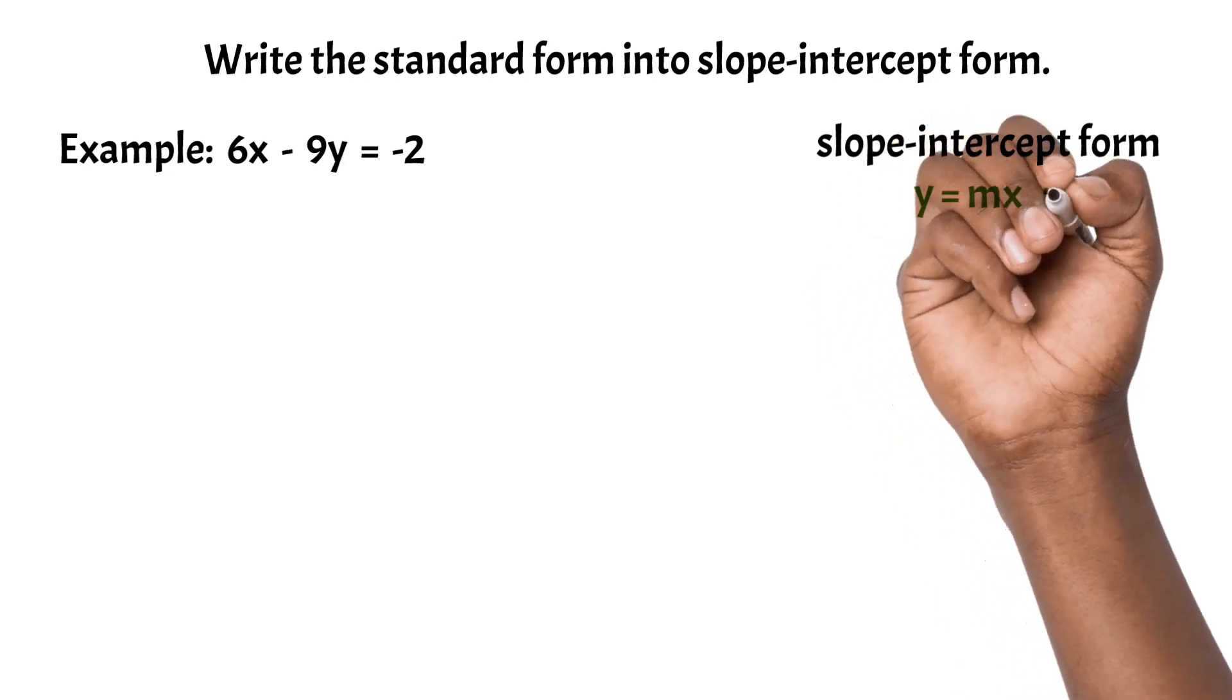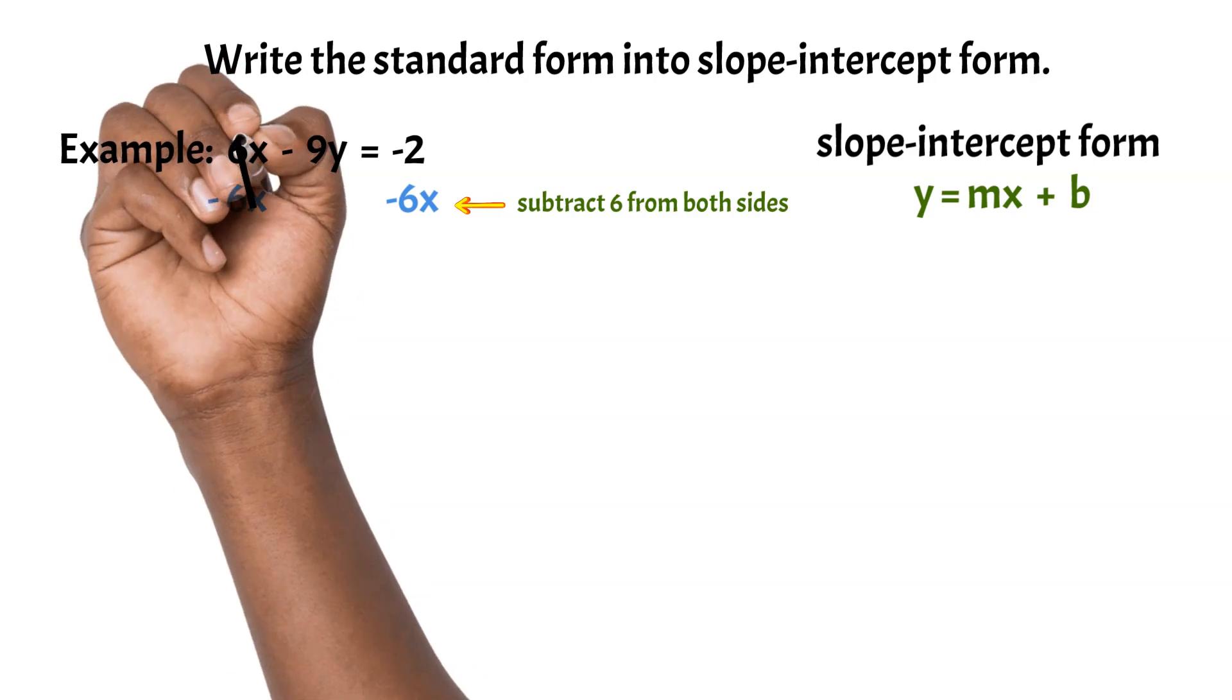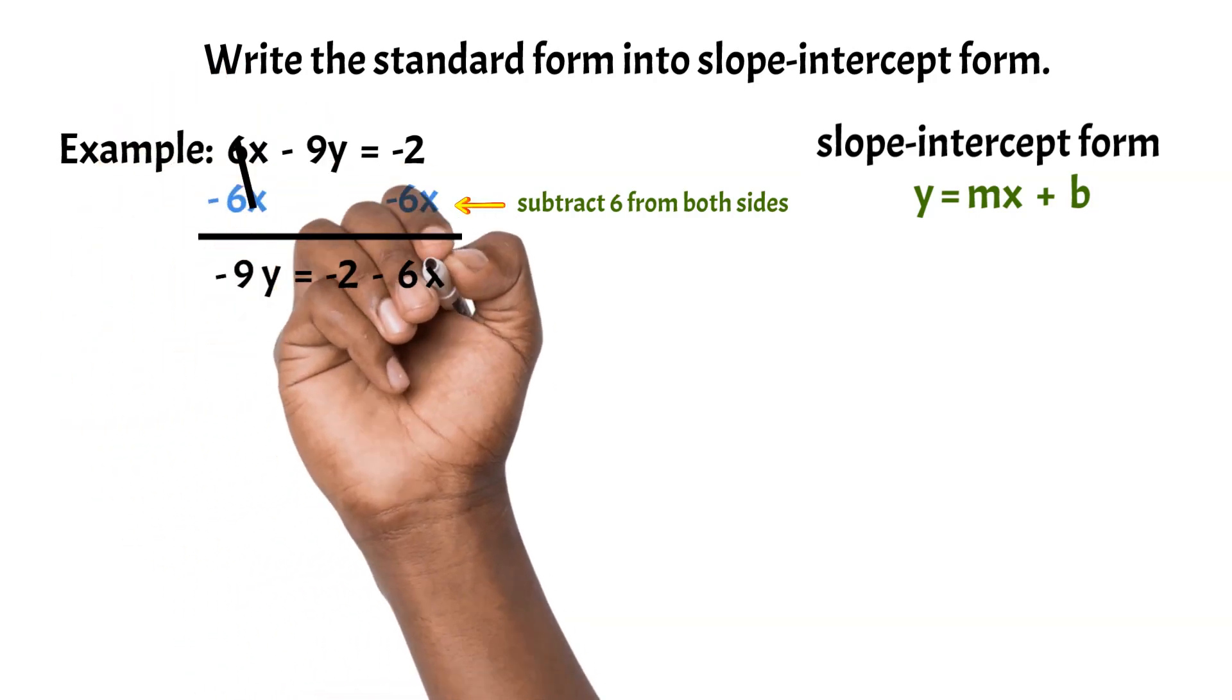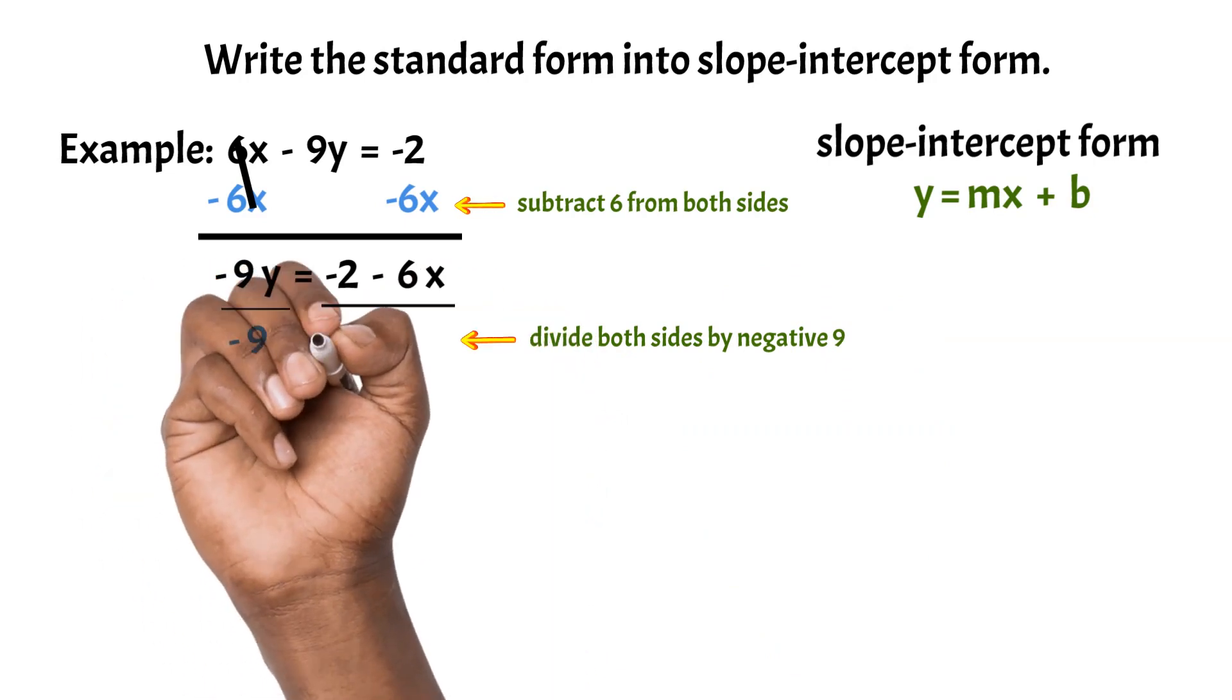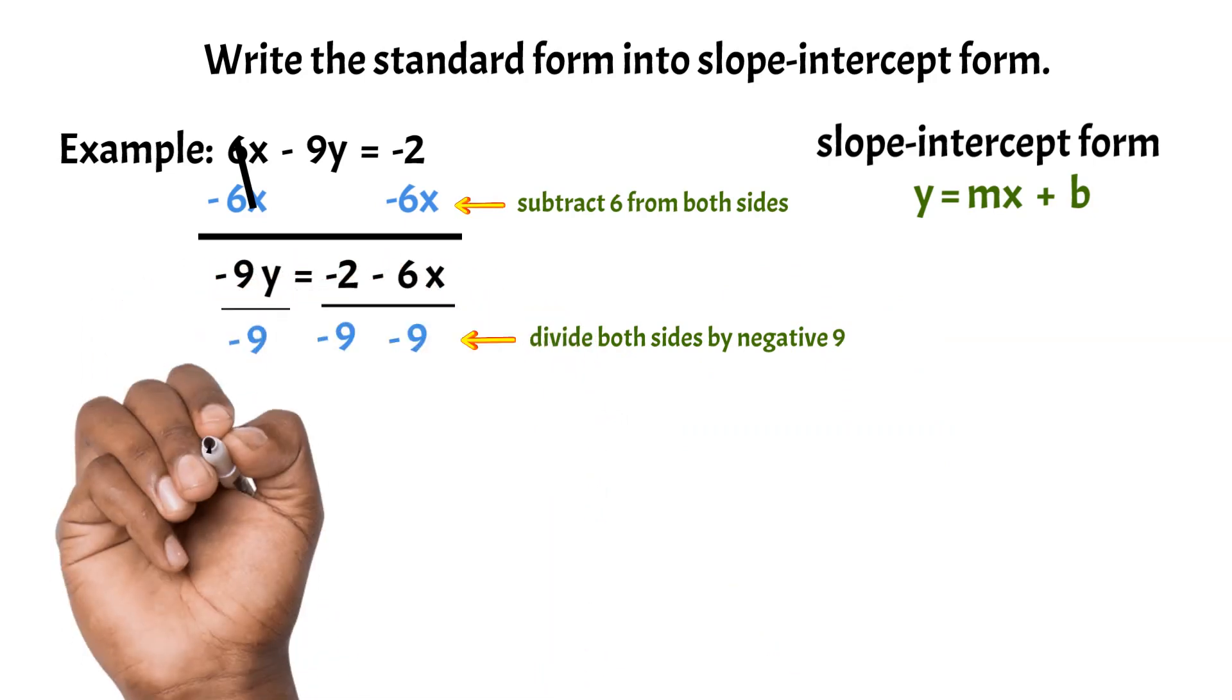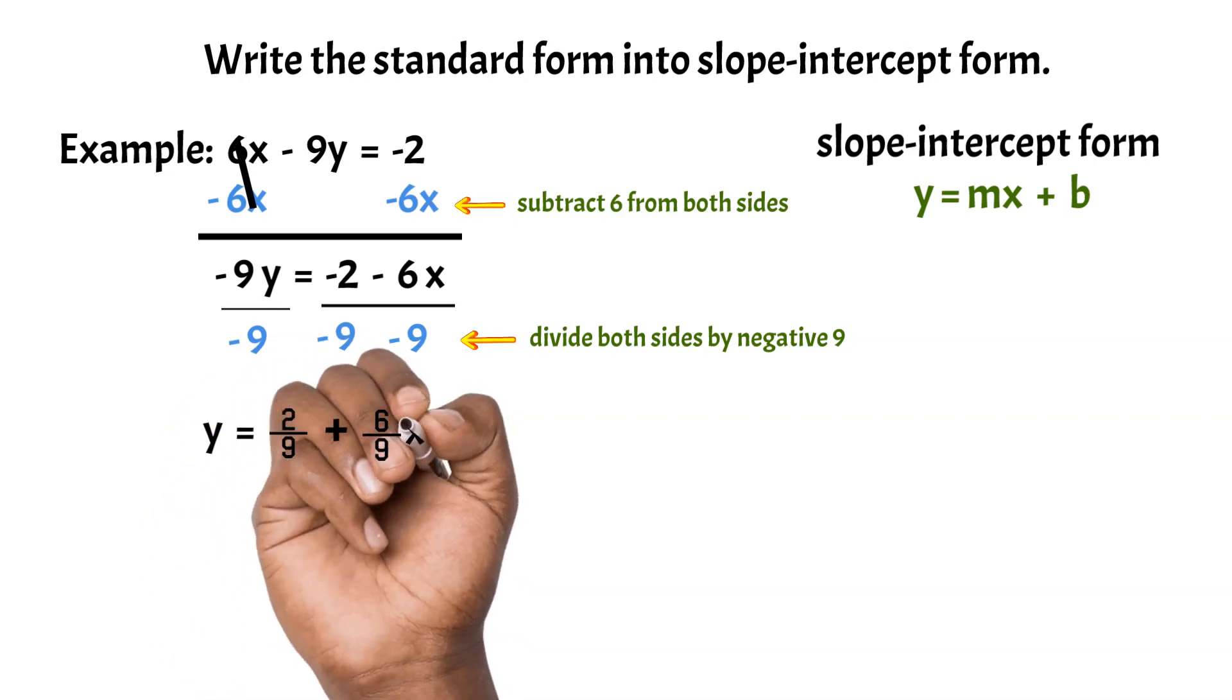Example: 6x - 9y = -2. Now subtract 6x from both sides, we get -9y = -2 - 6x. Now we divide each term by -9, we get y = 2/9 + 6/9x.